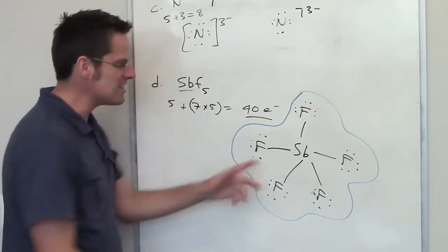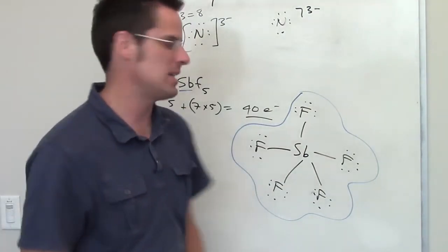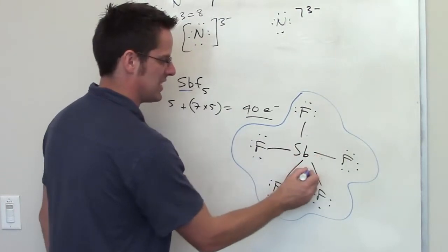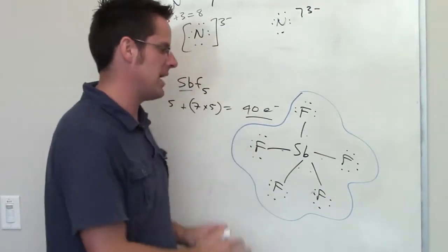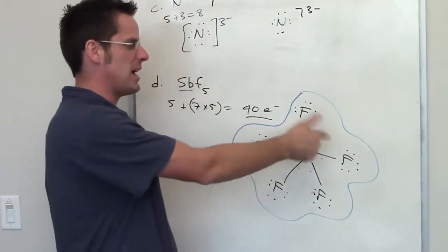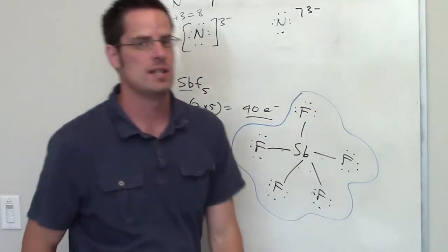You'll notice, however, that this antimony right here does not have an octet. It has 2, 4, 6, 8, 10 electrons around it. That is the total number of electrons in the system, and that is the only way I can put all these atoms together, unless I start violating octet rules with the fluorines. Now, generally speaking, we don't like to violate octet rules.